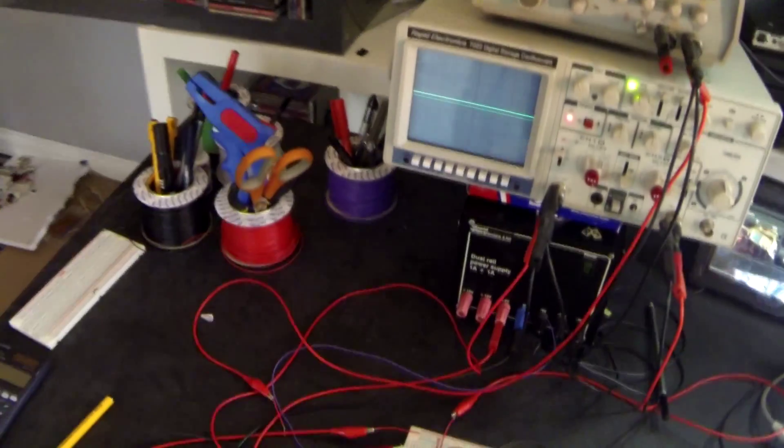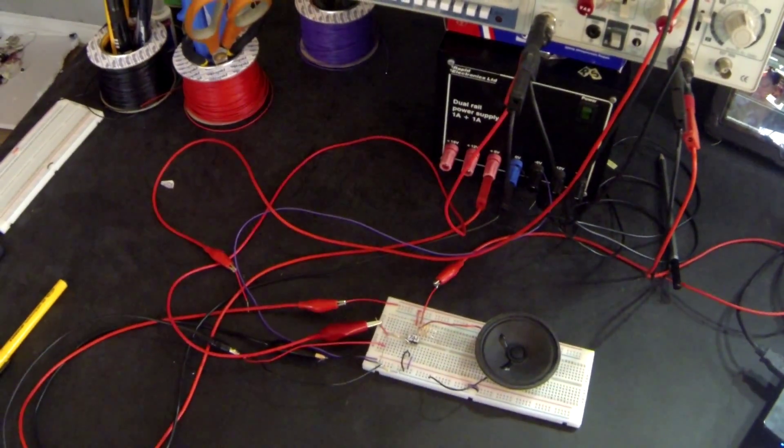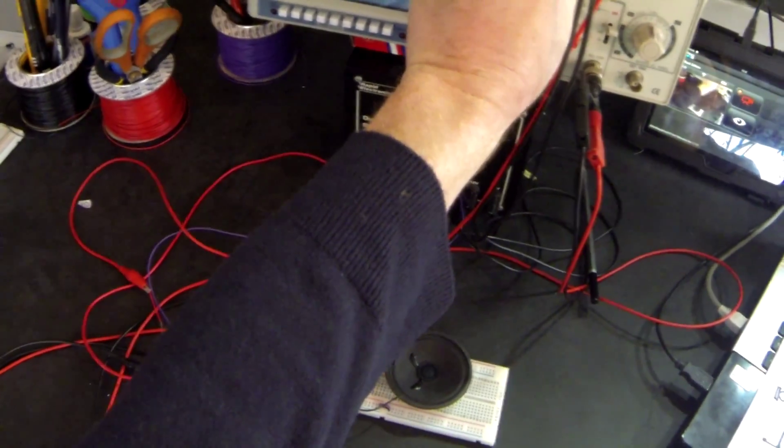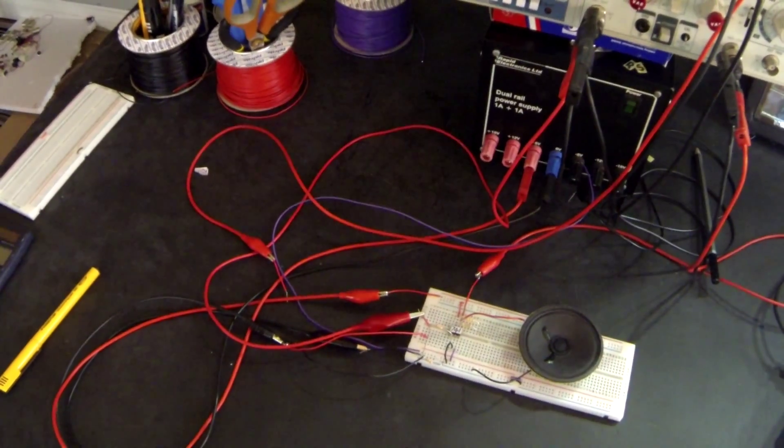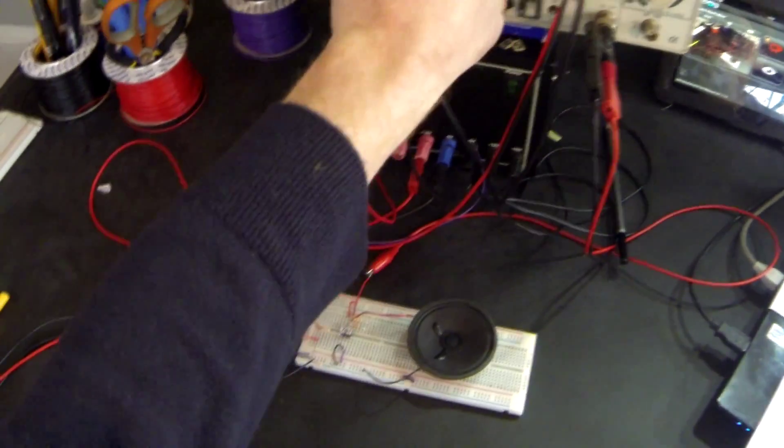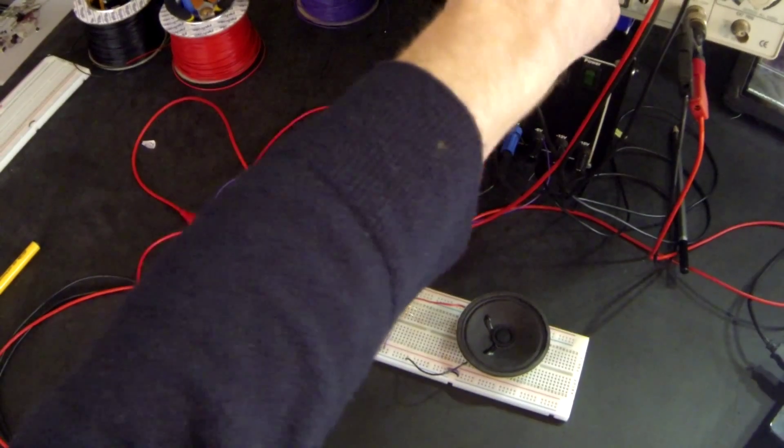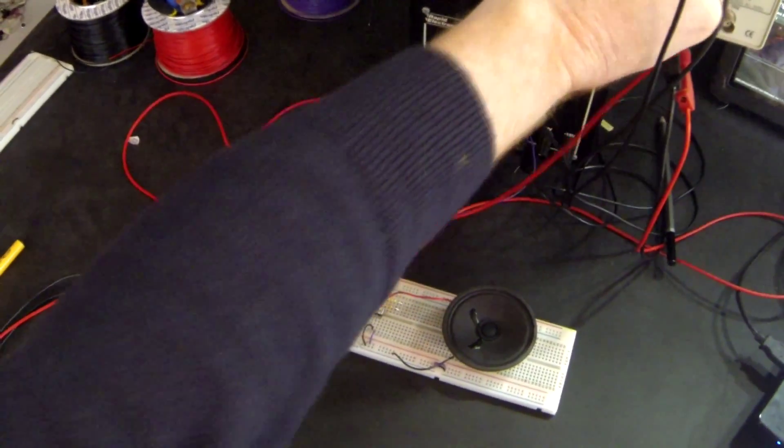So let's look at the waveforms on our oscilloscope input and output. I'm going to put the output lower here so that you can see both. And let's put them on. There we go. I'm just going to decrease the input and increase the output.